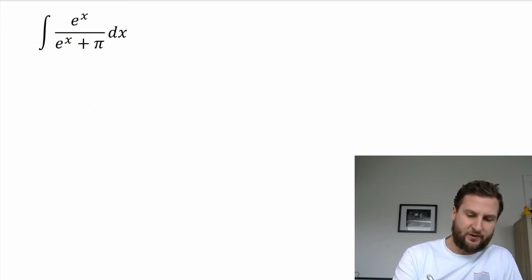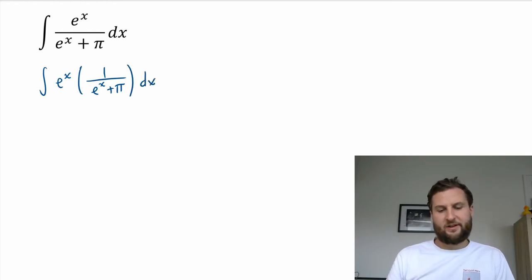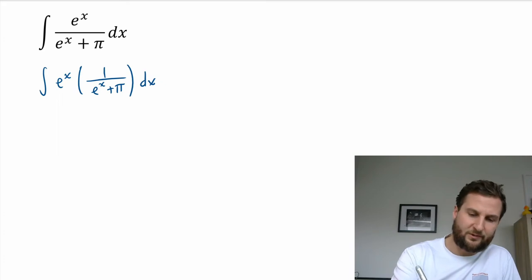So what I'm going to do here first is I'm just going to rewrite this as e to the x and then times one over e to the x plus pi, and then dx. So I'm just going to try to separate it into two terms and now let's get to my substitution.